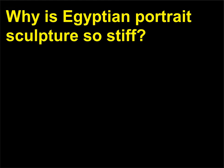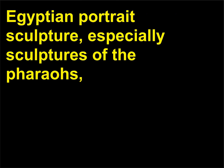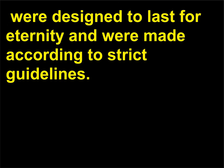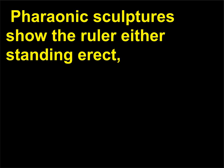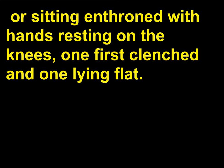Why is Egyptian portrait sculpture so stiff? Egyptian portrait sculpture — especially sculptures of the pharaohs — were designed to last for eternity and were made according to strict guidelines. Pharaohs needed to be clearly identifiable by their elaborate headdresses and false beards. Pharaonic sculptures show the ruler either standing erect or sitting enthroned with hands resting on the knees, one fist clenched and one lying flat.